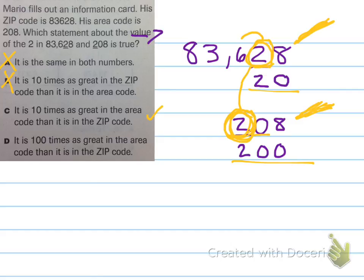D, it is 100 times as great in the area code than it is in the zip code. So, they're saying 100 times greater in the area code than the zip code. Well, we're only moving over one place value, so that's only 10 times greater. So, no, not 100 times greater.